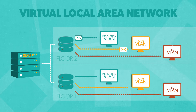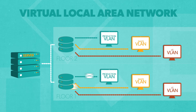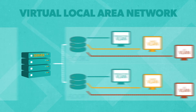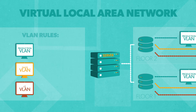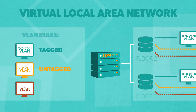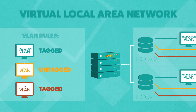Devices within a VLAN can communicate with each other and each other only. They store rules about how subnetworks can communicate in access ports, which are classified as tagged or untagged.